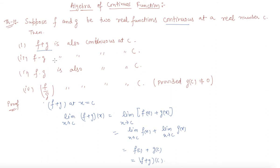Similarly, students, we can prove for F minus G, F into G, and F by G. So all four properties hold true: if F and G are two continuous functions at a real number C, then all four of these combined functions are also continuous at C.